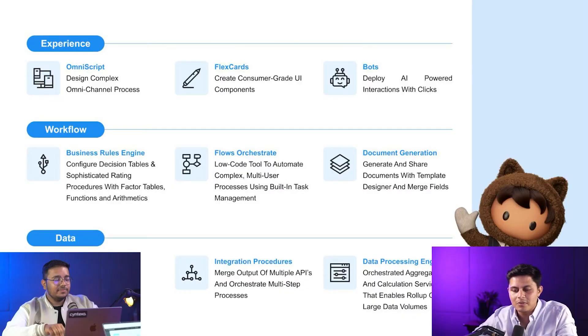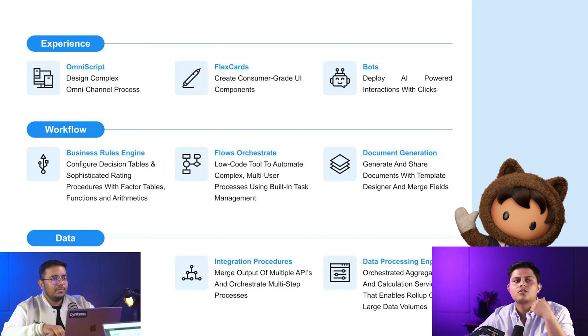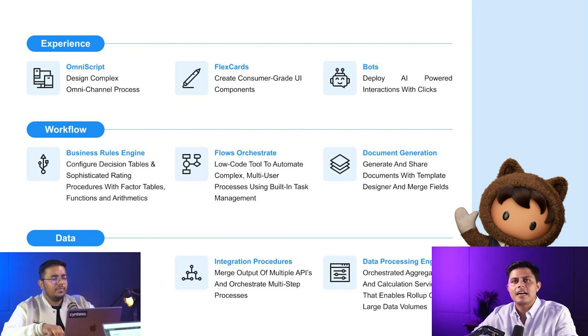Let's get into the details of how you can actually create different kinds of automations or business processes with the help of Financial Services Cloud. Number one is OmniScript — you can use it to design complex omni-channel processes. Then comes FlexCard, which you can use to create different UI components that act as cards to get information or guide users through a particular business flow.